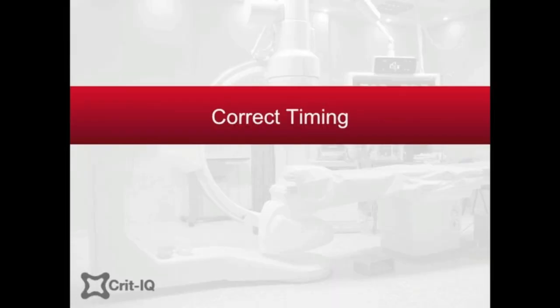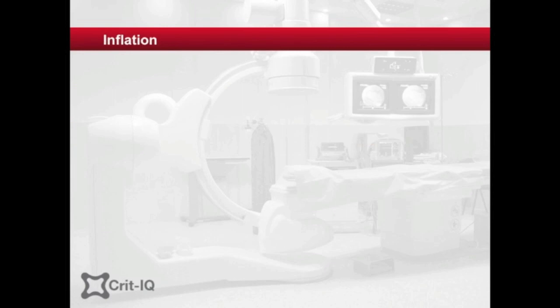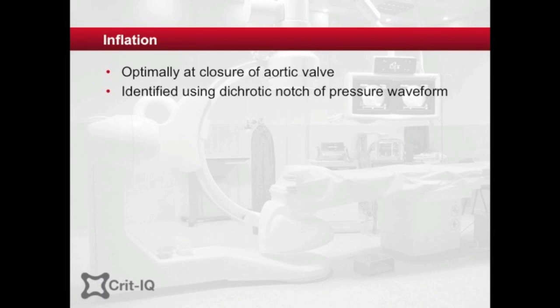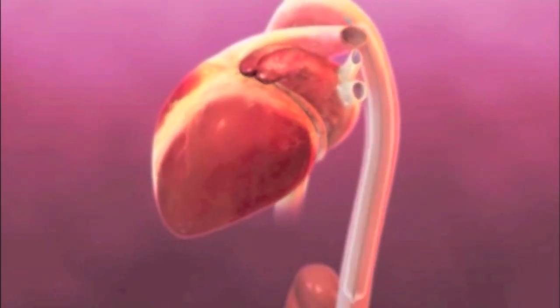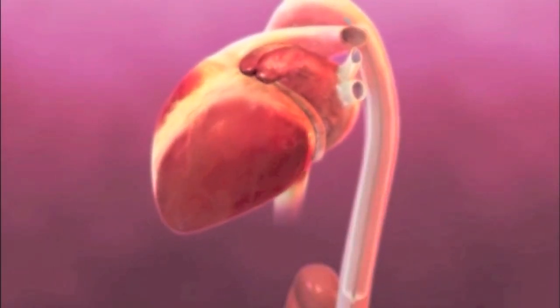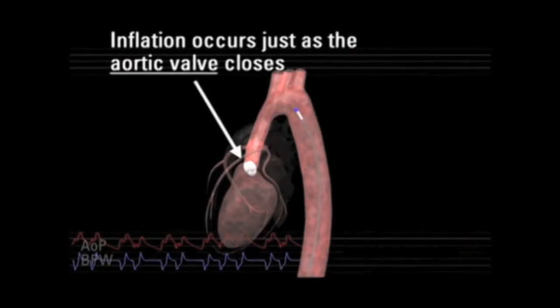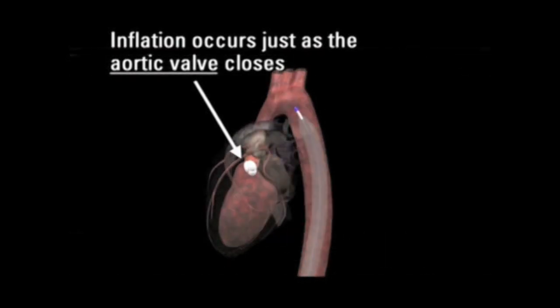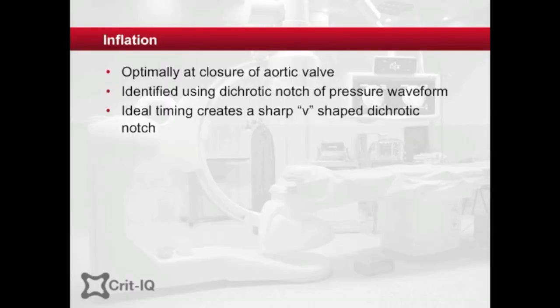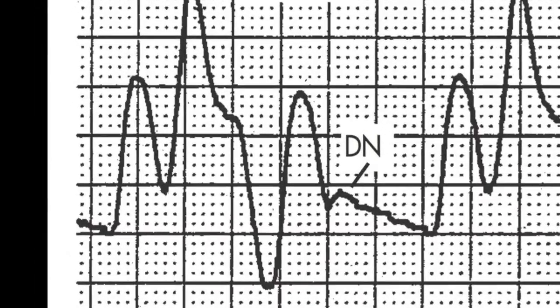The correct timing for inflation and deflation of the balloon is imperative to the functioning of the balloon pump. Inflation should be on closure of the aortic valve, marked by the dicrotic notch on the waveform. When the balloon inflates with the onset of diastole, blood is propelled under pressure through the coronary ostea above the aortic valve and into the coronary arteries, thus providing better perfusion pressures compared with the passive filling that occurs during diastole in the unassisted heart. With correct timing, the dicrotic notch should have a sharp V-shape.